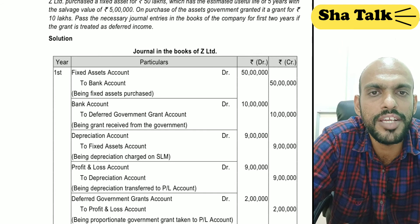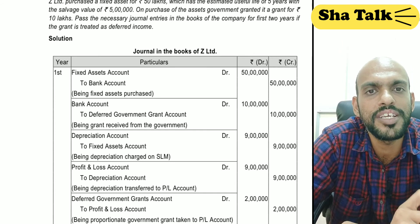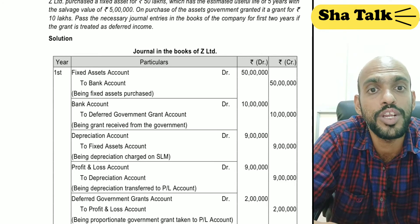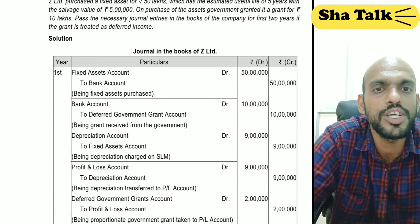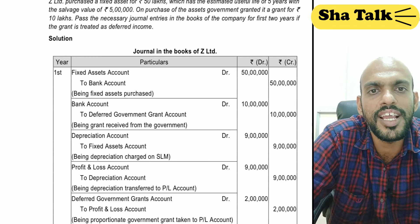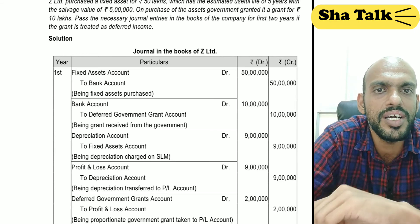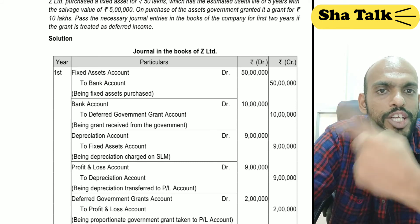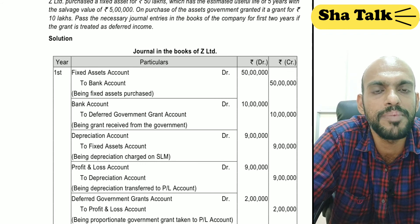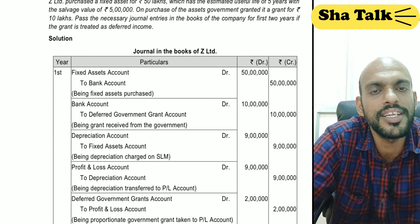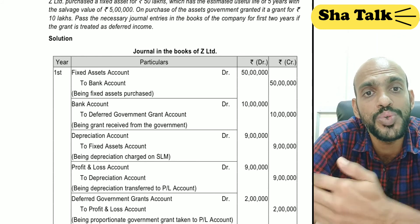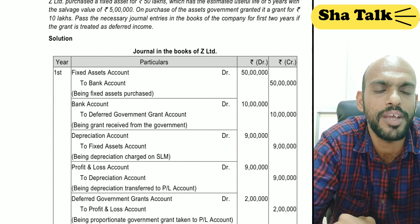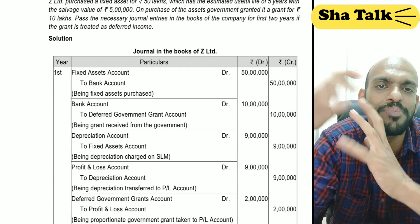The government grant received from the government — in this case the revenue-related grant gets recognized as a grant. The deferred grant amount is spread over the period, and the corresponding entry is made to the P&L account as a debit, with asset money credited accordingly.